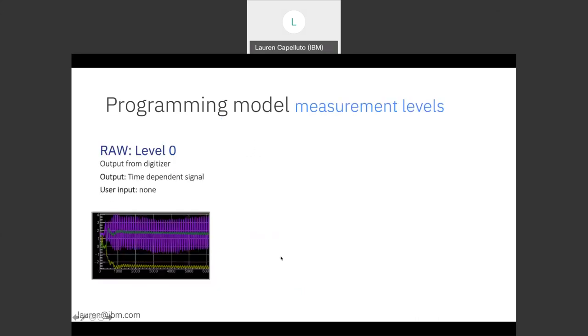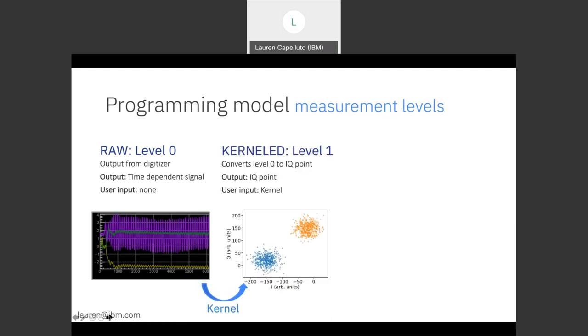Lastly, as I mentioned before, we have lower level data in the readout chain. So what this looks like in our system, we have at the lowest level our raw data. This is output directly from those analog to digital converters. We can integrate this signal using a kernel to create an IQ point. So the signal on the left side is going to correspond to just a single point in the middle.